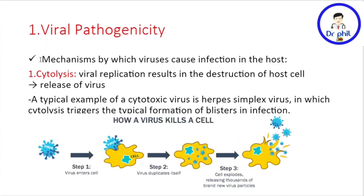On viral pathogenicity, the mechanisms by which viruses cause infection to the host cell include the following. Number one is cytolysis. This is possible because viral replication results in destruction of host cells, thereby releasing the viruses.